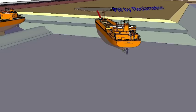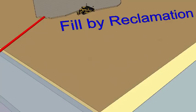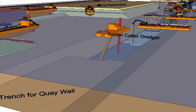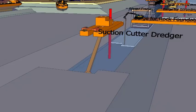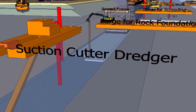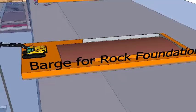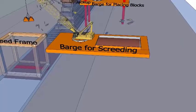Cutter suction dredgers are used to dredge hard soils by cutting and breaking up the soil using a rotating head at the end of a pipe which is lowered onto the seabed. The fragmented material is sucked and pumped either into a hopper barge or through a floating pipeline. During operation the dredger is anchored by a spud, which allows the cutting head to swing in an arc. Split hopper barges are used to transport dredged or fill material which is then discharged through openings in the bottom. Barges are long flat-bottomed water vessels used for transporting materials and equipment such as cranes and excavators, and can be self-propelled or towed by tugs.